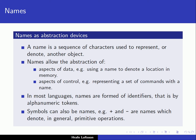We start with names. One of the important aspects in computer science is the abstraction mechanism. We often try to abstract away from the physical machine. A name is really just an abstraction device — a sequence of characters used to represent or denote another object. For example, a name can denote a location in memory, which is very common in programming languages when we declare names.